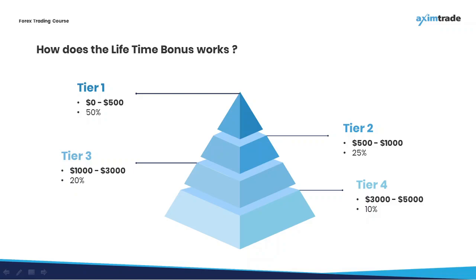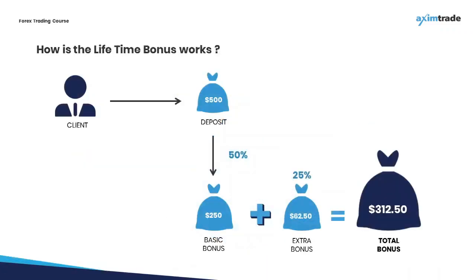Bonus percentage depends on the tier and the region from which bonus credits are utilized. If the calculated bonus amount is more than the size of the first and subsequent tiers, the deposit amount will be automatically split into parts to utilize each tier in full one by one. Bonus percentage will be applied according to each particular tier, and clients can check the progress bar located in their member area.